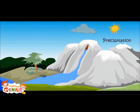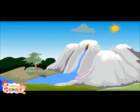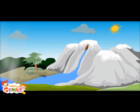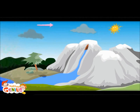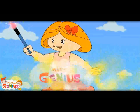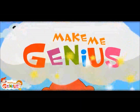See Jimmy, now the raindrops have become part of the river. Now again it would become vapor when the sun comes out. You are a smart boy. That is why it is called the water cycle.